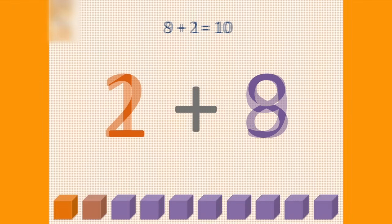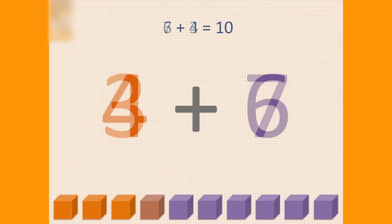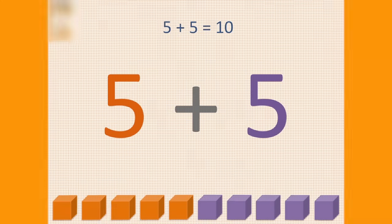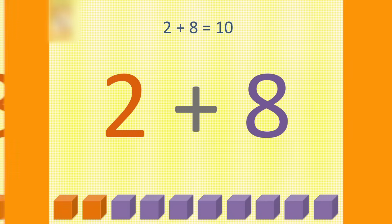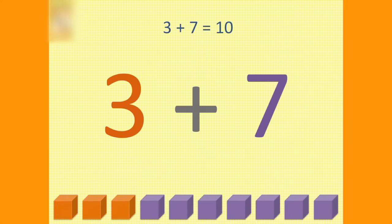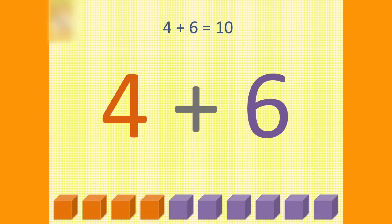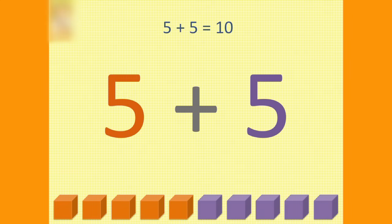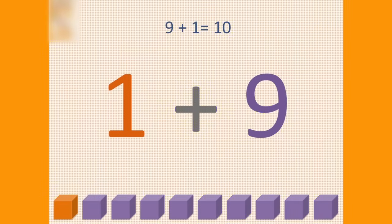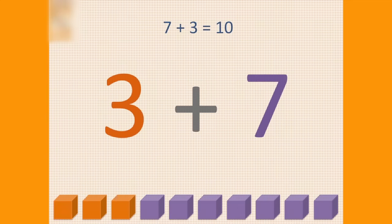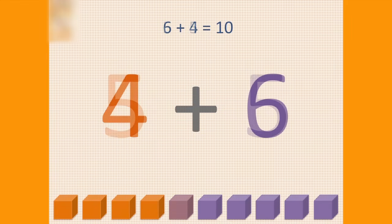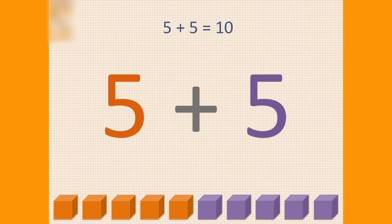One and nine is ten, two and eight makes ten, three and seven is ten, four and six is ten, five and five is ten, then we start again. One and nine, two and eight is ten, three and seven is ten, four and six is ten, five and five is ten, then we start again.